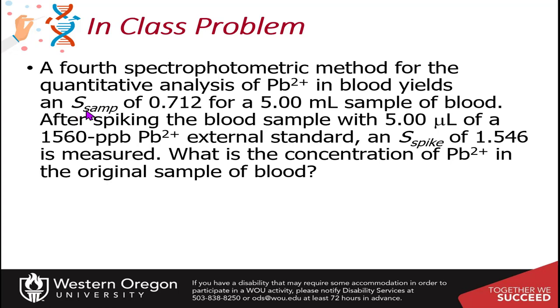and it yields a signal of the sample of 0.712 for a 5 milliliter sample of blood, and then after spiking the blood sample with 5 microliters of 1560 part per billion lead standard, the signal of the spike is 1.546. So this is asking what is the concentration of lead in the original sample of blood.